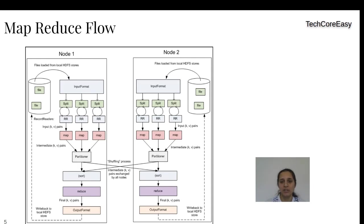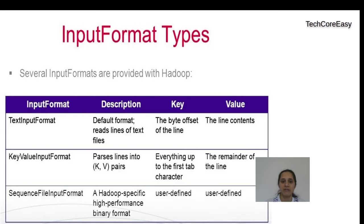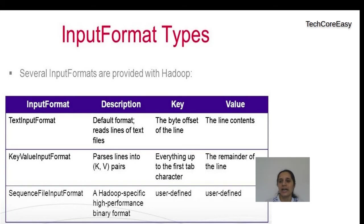The Record Reader converts data into key-value pair format depending on the input format specified in your job. The Text Input Format is the default human-readable format stored as text. Here the key is the byte offset. For example, if you have a text file with two lines — 'hi' and 'TechCore Easy' — the first line has key zero and value 'hi'. For the second line, the offset is two, so key is two and value is 'TechCore Easy'.